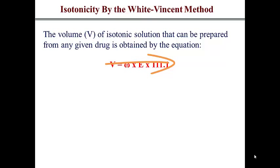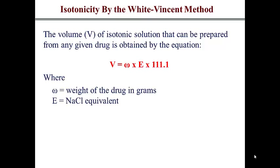The White-Vincent equation is: V equals the weight of omega times E times 111.1. The omega refers to the weight of drug in grams, and E is the sodium chloride equivalent.